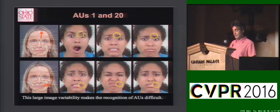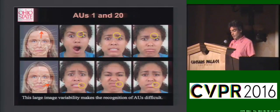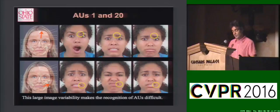As you can see in the images of AU1 active, the image variability is very high even at the area of activation, which is shown here within a yellow circle. The same is true for AU20 and all other AUs. This image variability increases when we wish to model different intensities of AU activation.